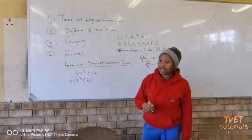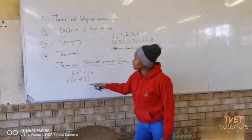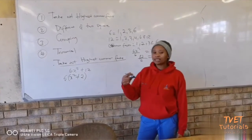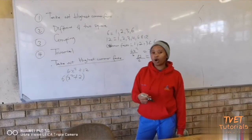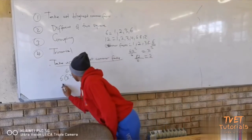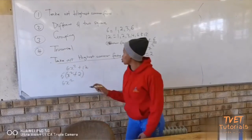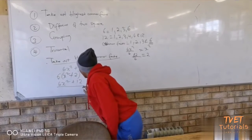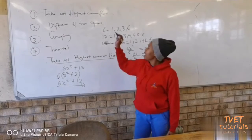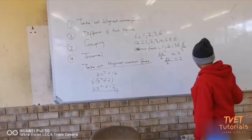To check whether we are correct, when we expand the brackets we must get the original expression. So 6 multiplied by x squared gives us 6x squared. 6 times 2 gives us plus 12. We get the original expression, so we are correct. Then we move to number two, where we factorize a difference of two squares.